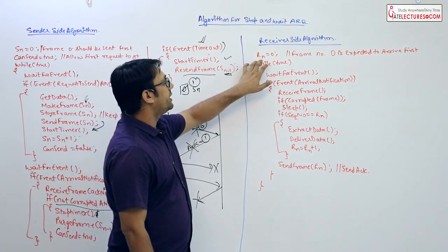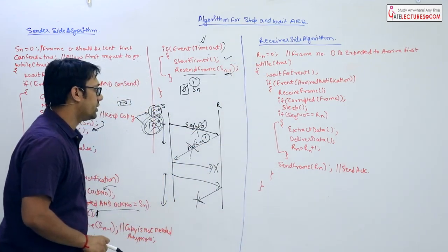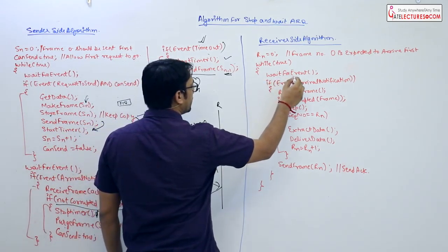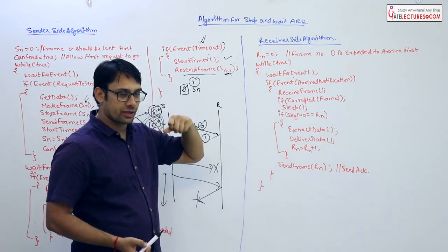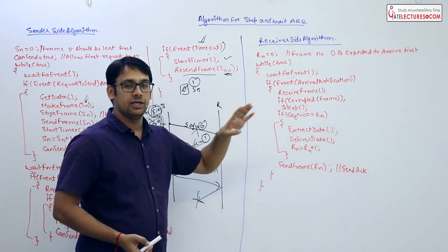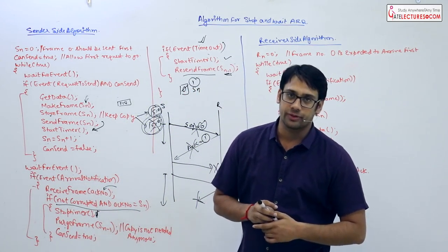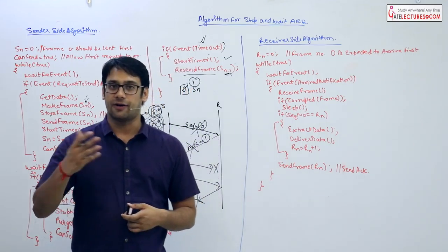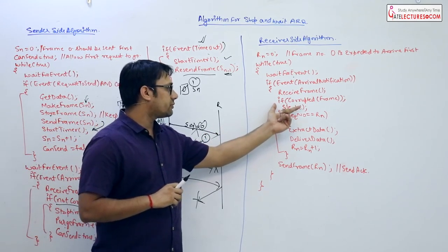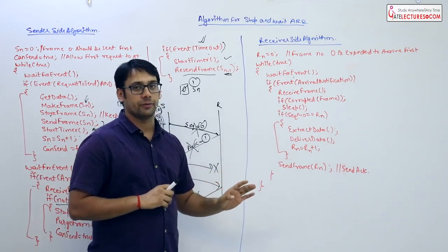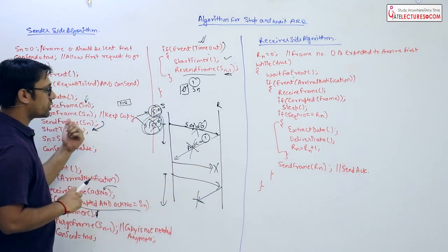At the receiver side, the receiver maintains its own sequence number RN, initialized to zero. It waits for an event — waiting for a data packet to arrive. Upon an arrival notification, it receives the frame and checks whether the frame is corrupted using error control methods. If the frame is corrupted, the receiver simply does nothing (sleeps), causing the timeout timer at the sender side to expire.